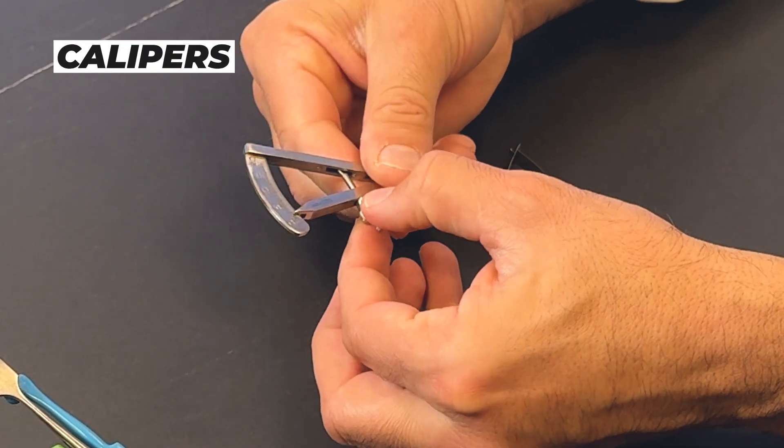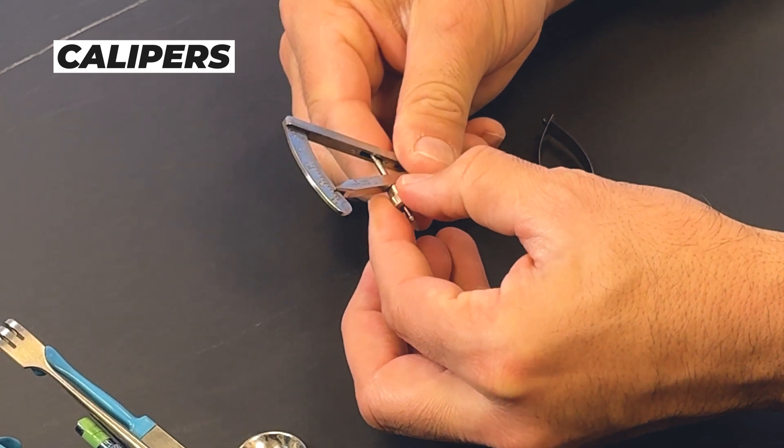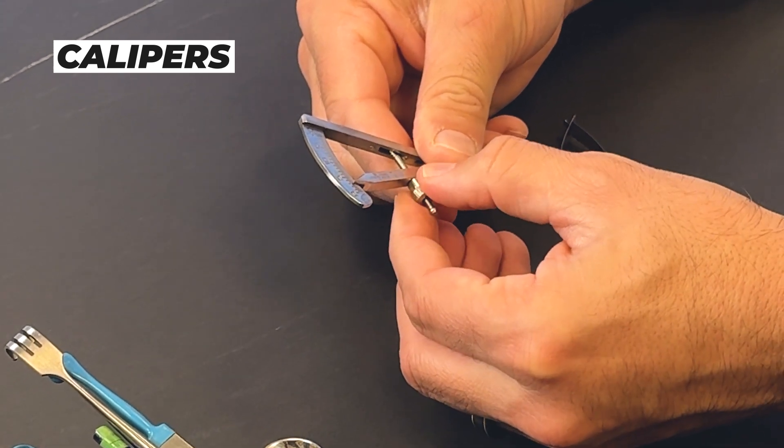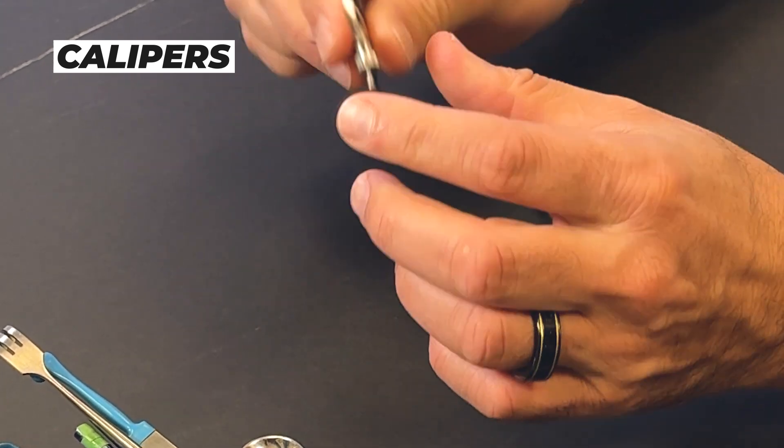When I'm doing ptosis repair, elevating the eyelid, when the eyelid's droopy, I use calipers. This is a caliper, so you can see it. Generally, if I'm resecting, let's say, four millimeters of muscle or six millimeters, I'll make my measurements using my caliper.